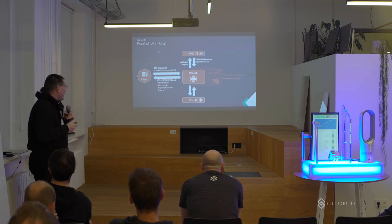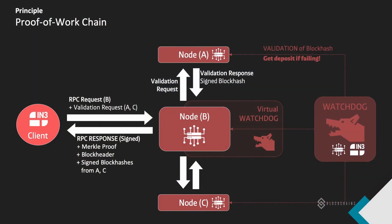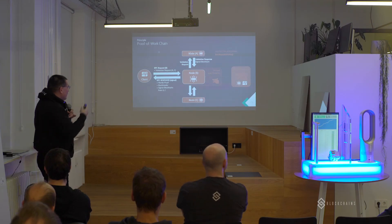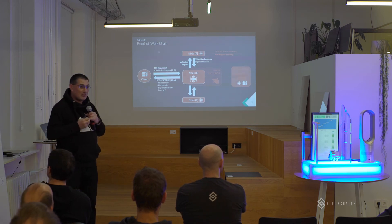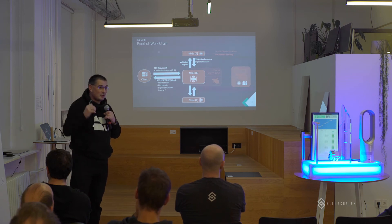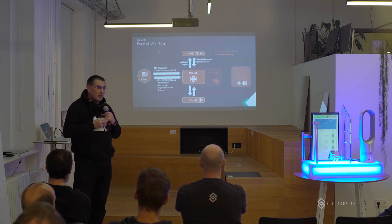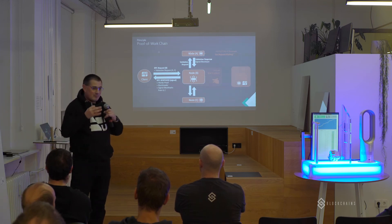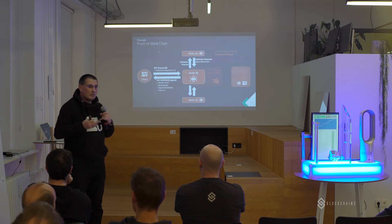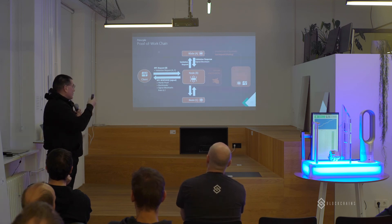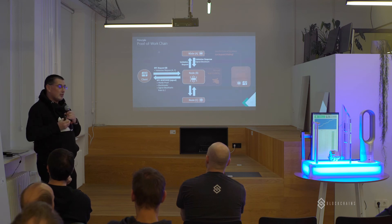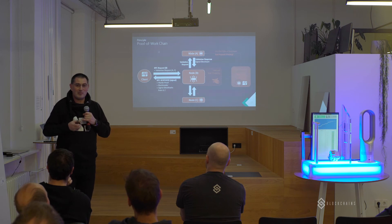We can also put additional active watchdogs into the network. They send requests to node A, node B, and node C asking them for a signed block hash. They act as a client but also have a connection to the blockchain, meaning they know what the real answer is. If node A gives a wrong answer, they can convict it directly. With these active watchdogs, I can bring a higher level of security when needed. The node cannot see if the requester is a client or a watchdog, which is why the risk of giving an incorrect answer is even higher.